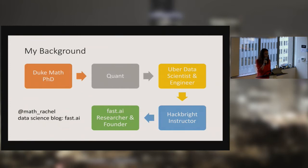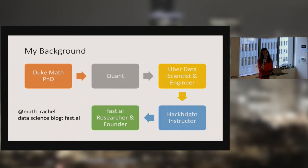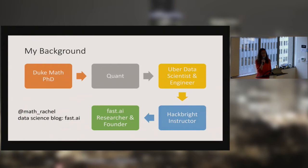I taught full-stack software development at Hackbright. I really loved teaching — I had taught calculus while I was in grad school, and I think I'll probably always return to teaching. One year ago, I started fast.ai together with Jeremy Howard, who's the previous president of Kaggle and founder of Enlitic, which was the first company to use deep learning for medicine.